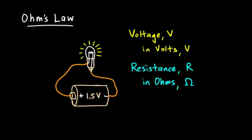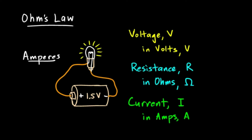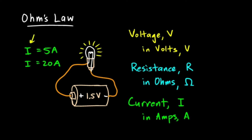The third thing to consider is the current. The symbol for current is I — the letter C is used for other things, so it's not the most intuitive symbol, but current is commonly represented by the letter I. It's measured in amps. The symbol for amps is A. Sometimes you hear amperes, which is the correct term, named after André Ampère, a French physicist who did a lot of work with electrical theory. Amps is just short for amperes. So the current might be written as 5 amps or 20 amps.